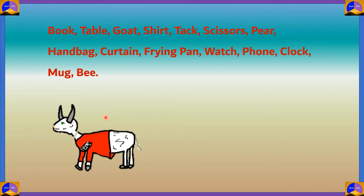For scissors and pear, you can imagine trying to eat a pear but instead you're eating a scissor and your mouth starts bleeding. For pear and handbag, visualize yourself carrying a large pear and going out shopping — that is another illogical image. You can also visualize eating a handbag or any other illogical image you come up with.